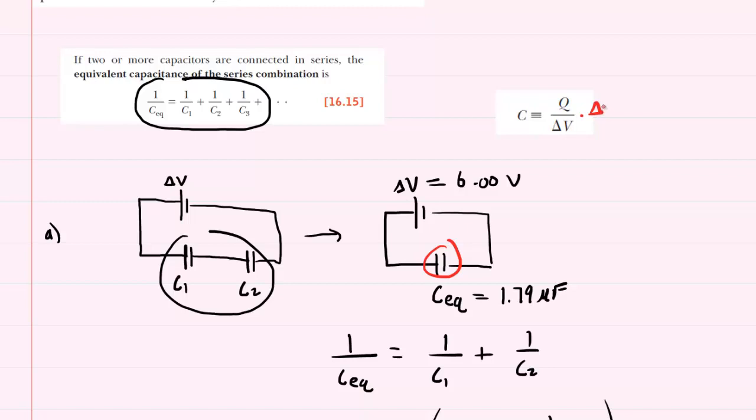Why don't we multiply both sides of this by the delta V so it cancels out on the right-hand side. And we can see that the charge, capital Q, will equal the delta V times C.